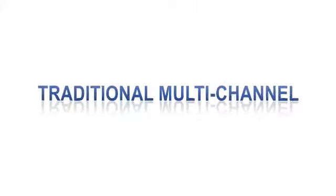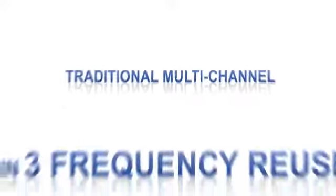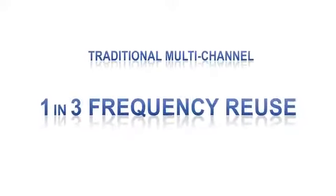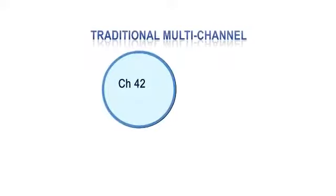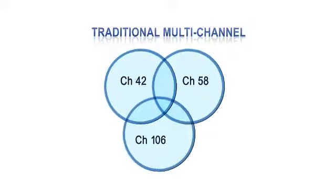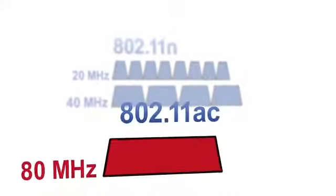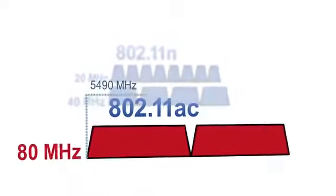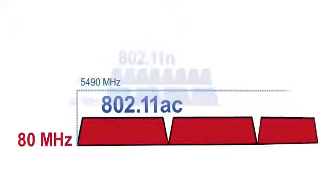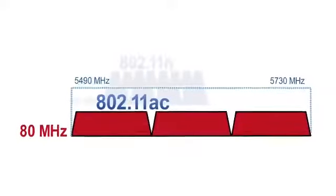Traditionally, a lot of enterprises would have deployed using a one-in-three frequency reuse, as illustrated here — using frequency one, two, and three, and then reusing the frequency. So you'd need a minimum of three channels. If you're deploying 802.11ac with an 80 MHz channel, that would be three times 80 MHz, so you'd need at least that amount of spectrum available.